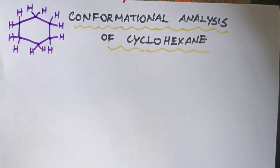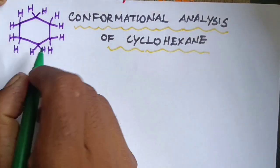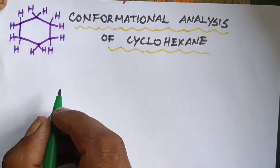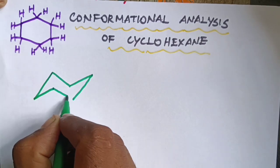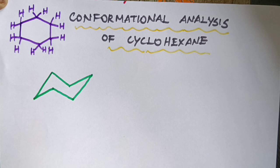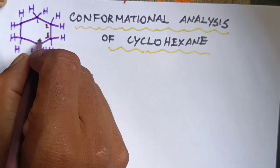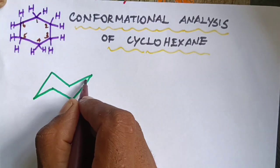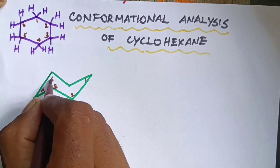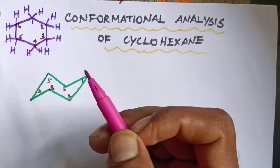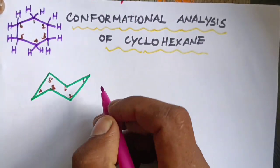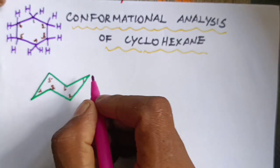Hi guys, now we will talk about conformational analysis of cyclohexane. This is the structure of cyclohexane. We will draw the chair conformation. This is the chair conformation. This is the numbering: 1, 2, 3, 4, 5, 6. Every carbon has two hydrogens — one hydrogen is axial and another hydrogen is equatorial.